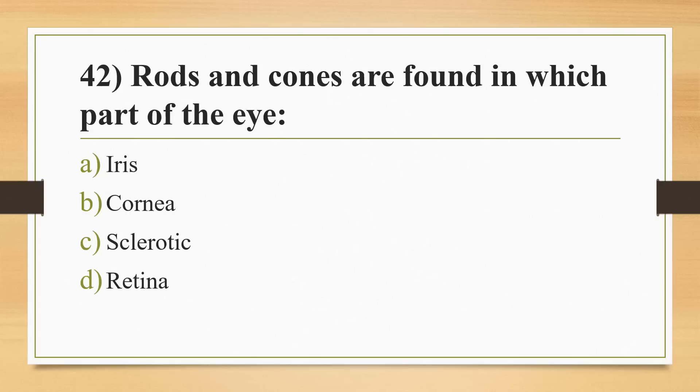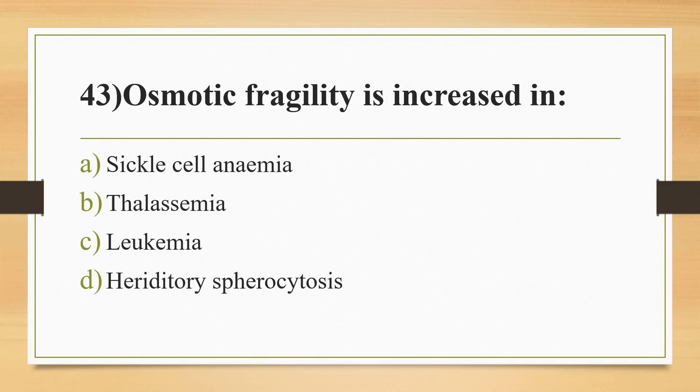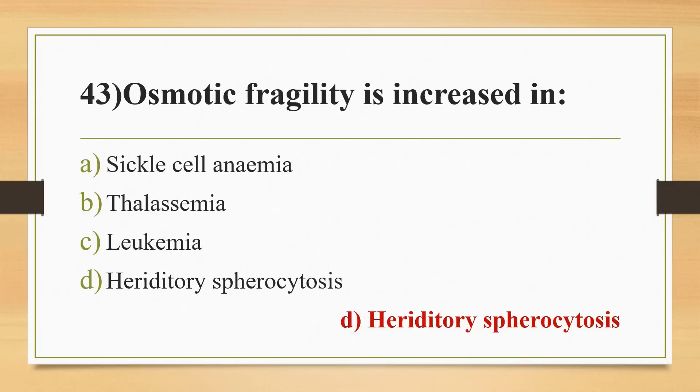Question 42: rods and cones are found in which part of the eye? Options: iris, cornea, sclera, or retina. Answer is Option D, retina. Question 43: osmotic fragility is increased in? Options: sickle cell anemia, thalassemia, leukemia, or hereditary spherocytosis. Answer is Option D, hereditary spherocytosis.